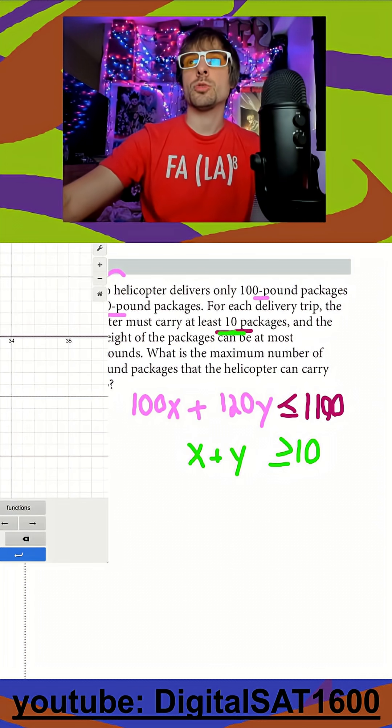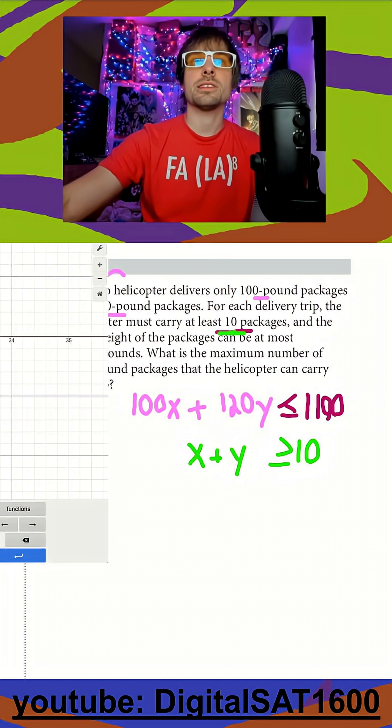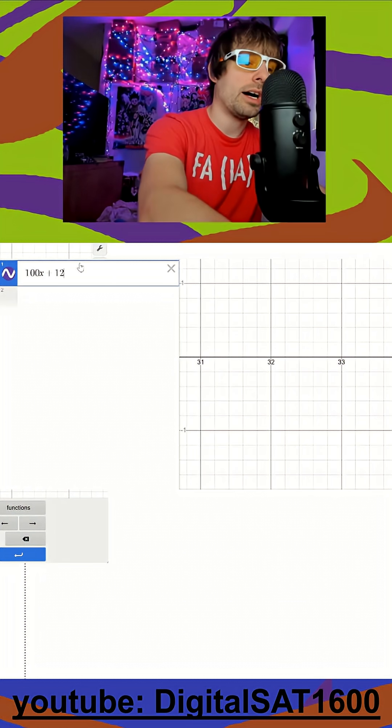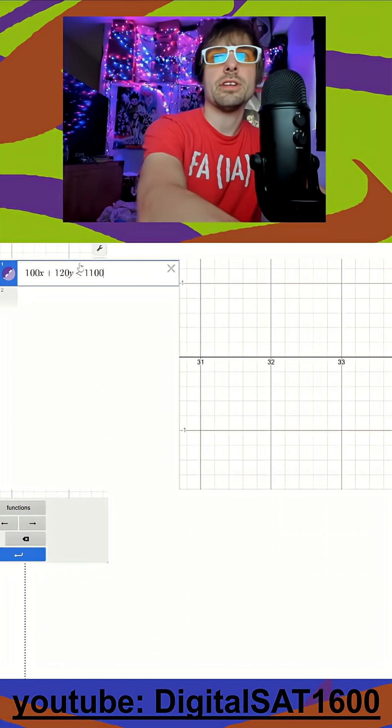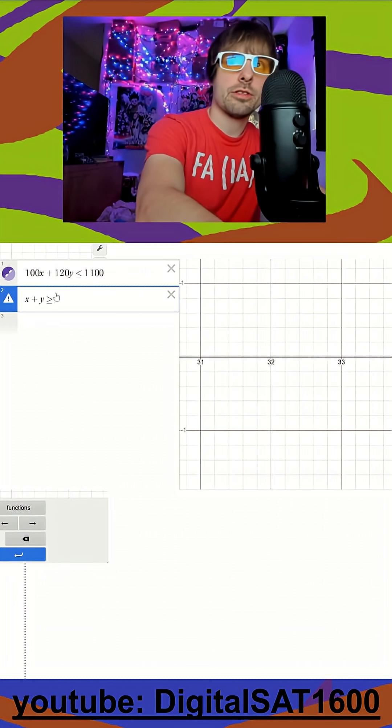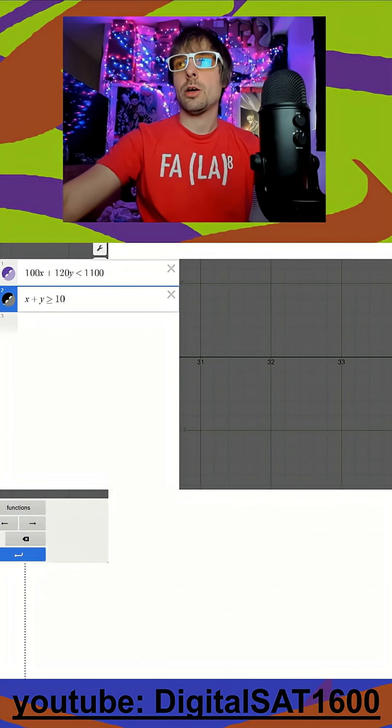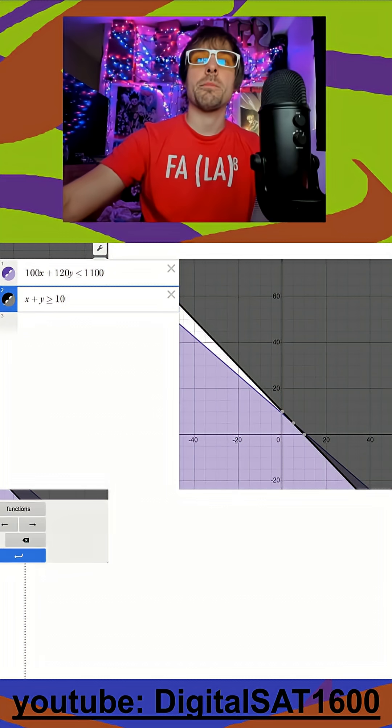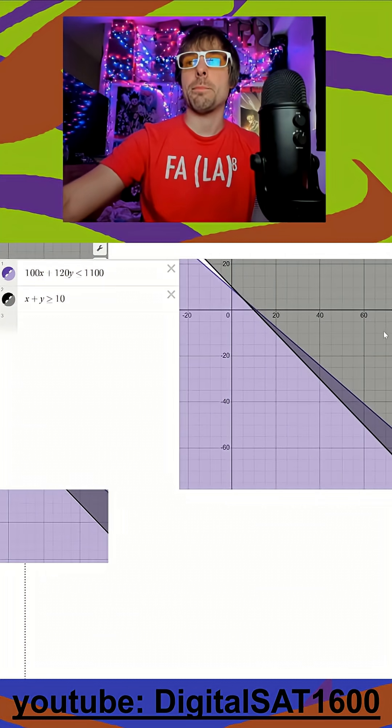So really not too bad to get those two equations. Let's throw them in Desmos and see what happens. So we have 100x plus 120y is less than or equal to 1,100. And then we have x plus y is greater than or equal to 10. And we're going to want to zoom out. And they wanted to know the most or the maximum number of, and let's just hide this real quick, the max number of 120 pound packages. So we want to know the biggest y possible here.